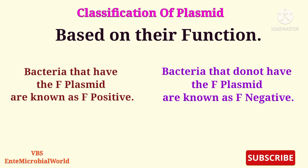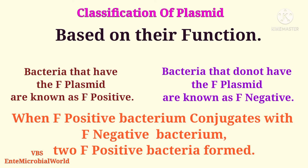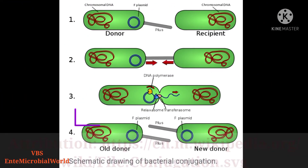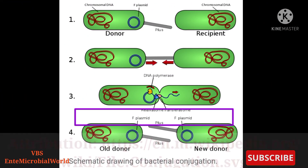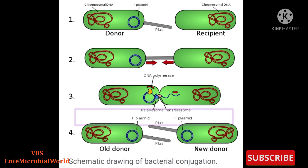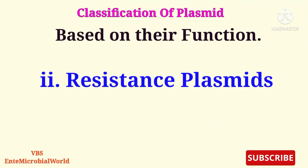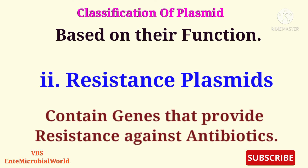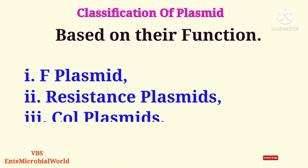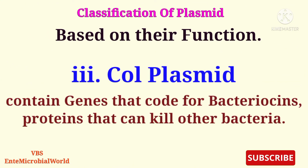Bacteria that have the F-plasmid are known as F-positive, and bacteria that do not have the F-plasmid are known as F-negative. When an F-positive bacterium conjugates with an F-negative bacterium, two F-positive bacteria are formed. Resistance plasmids contain genes that provide resistance against antibiotics.